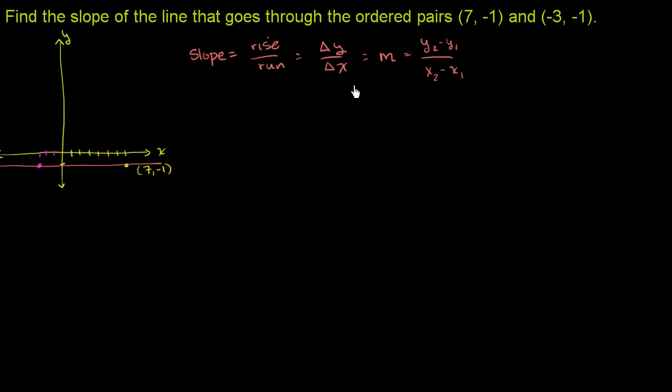I'm going from, you could either view this as the starting point, or view this as the starting point. But let's view this as the starting point, so this negative 3 comma 1. If I go from negative 3 comma negative 1 to 7 comma negative 1, I'm running a good bit.